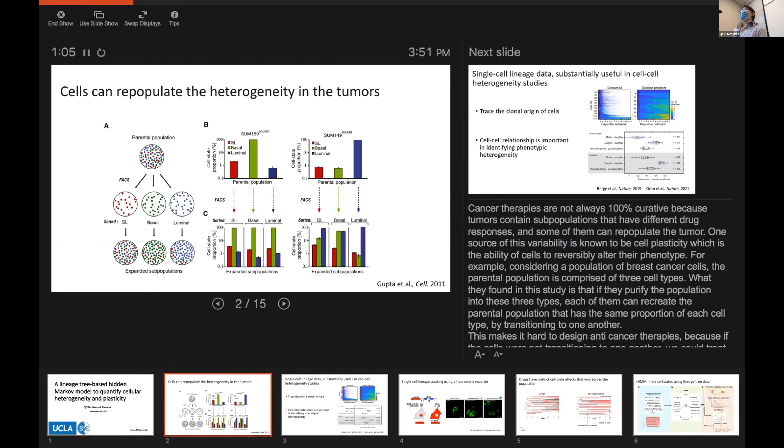For example, there's a study that says if you have breast cancer subpopulation and you use FACS in order to sort out various types of cells and you let these separate purified subpopulations grow for a couple of days, at the end, each of them will recreate the heterogeneity in their parental population.